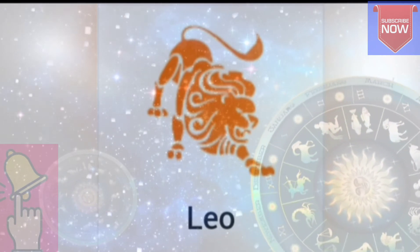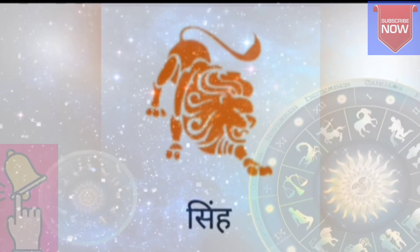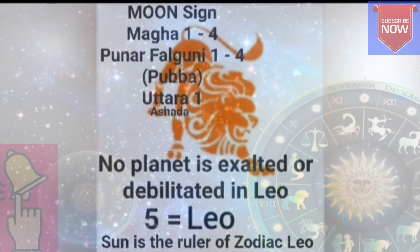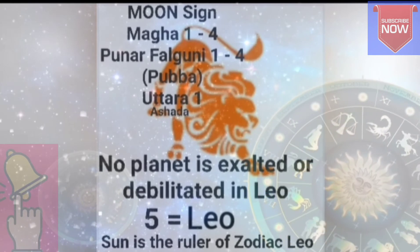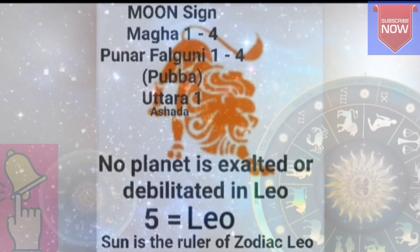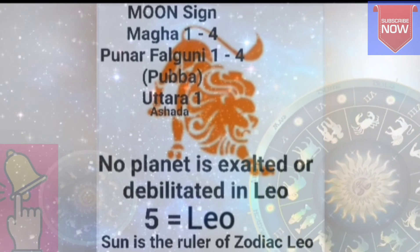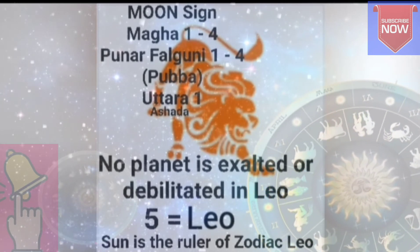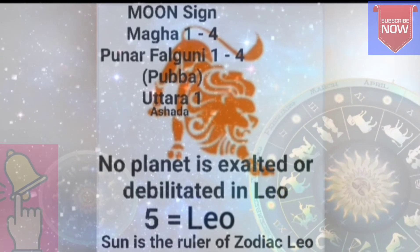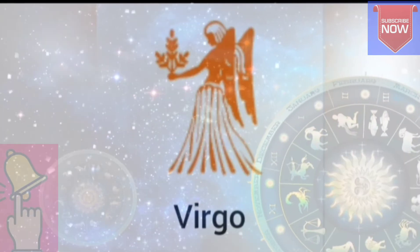Leo, number 5, is called Simha in Hindi. This Rashi is ruled by the Sun. There is no planet exalted or debilitated in this Rashi. It contains the nakshatras: Magha 1 to 4 Pada, Purva Phalguni 1 to 4 Pada, and Uttara Phalguni 1 Pada.